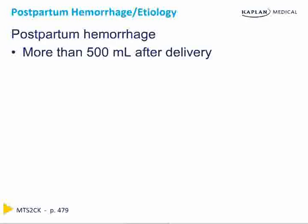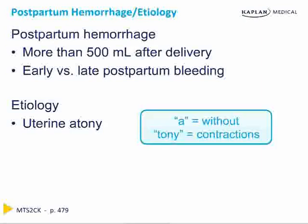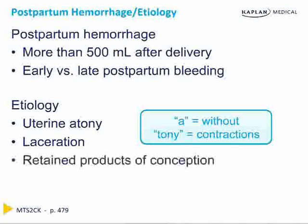Postpartum hemorrhage is defined as bleeding more than 500 milliliters after delivery. Hemorrhages are defined as either early, occurring within 24 hours of delivery, or late, occurring between 24 hours and 12 weeks after delivery. Etiologies include uterine atony — absence of contractions — which is the most common cause accounting for about 80% of cases; lacerations of the cervix or vagina; retained products of conception; and coagulopathy.